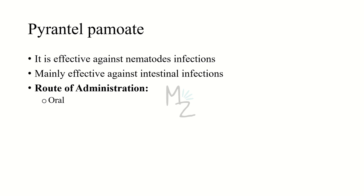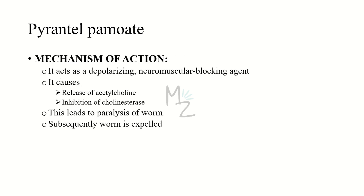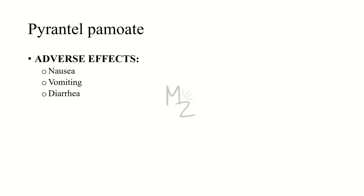The next drug is pyrantel pamoate. It is effective in the treatment of infections caused by roundworms, pinworms, and hookworms, and is mainly effective against intestinal infections. Its route of administration is oral. Mechanism of action: it acts as a depolarizing neuromuscular blocking agent, causing release of acetylcholine and inhibition of cholinesterase, leading to paralysis of the worm and subsequent expulsion. Adverse effects are mild and include nausea, vomiting, and diarrhea.